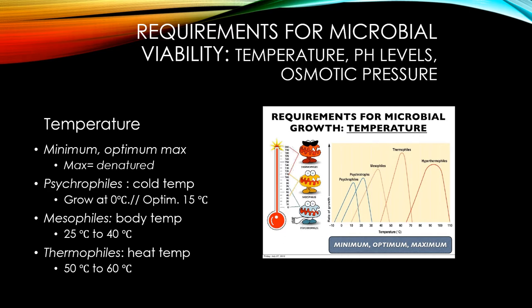When temperatures are above the maximum growth temperature, the microbe is likely to die because the heat is going to denature those proteins or enzymes. They won't be able to carry out their processes because they can't manufacture the proteins they need to survive and do their work. So let's talk about psychrophils first.